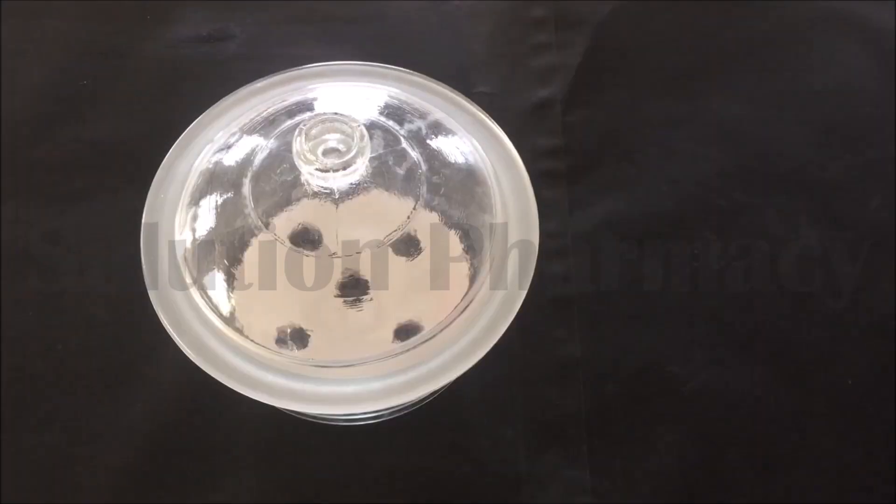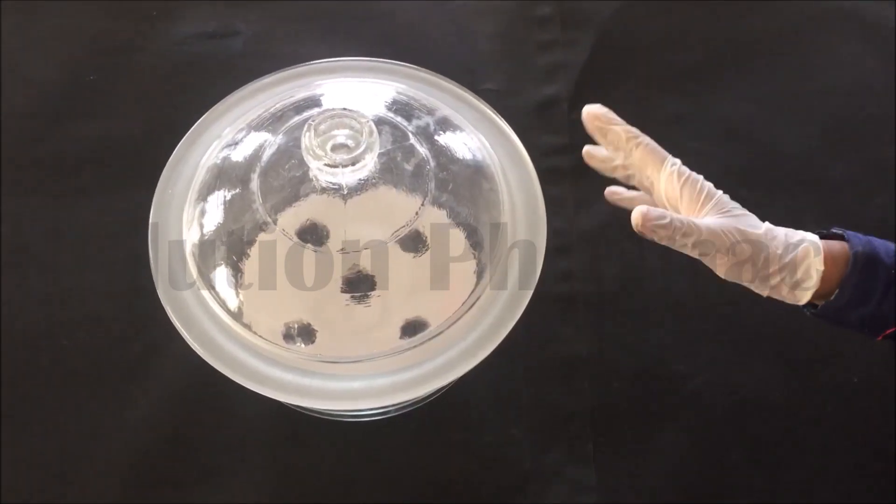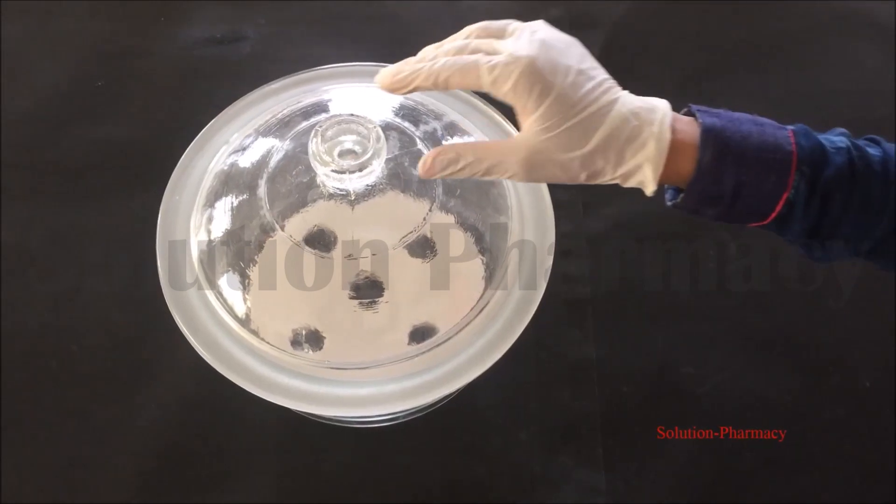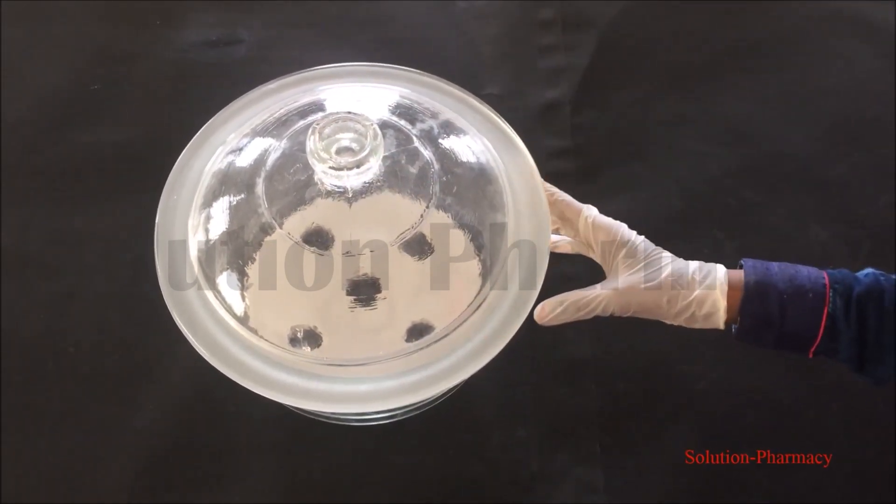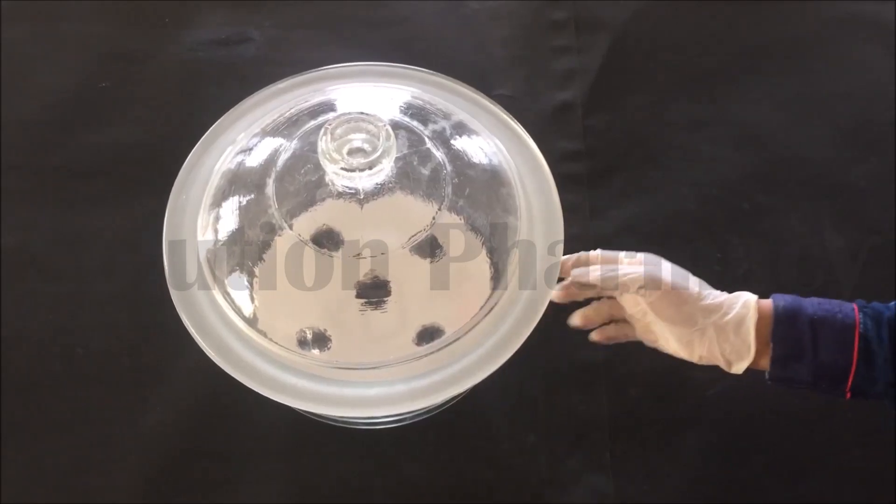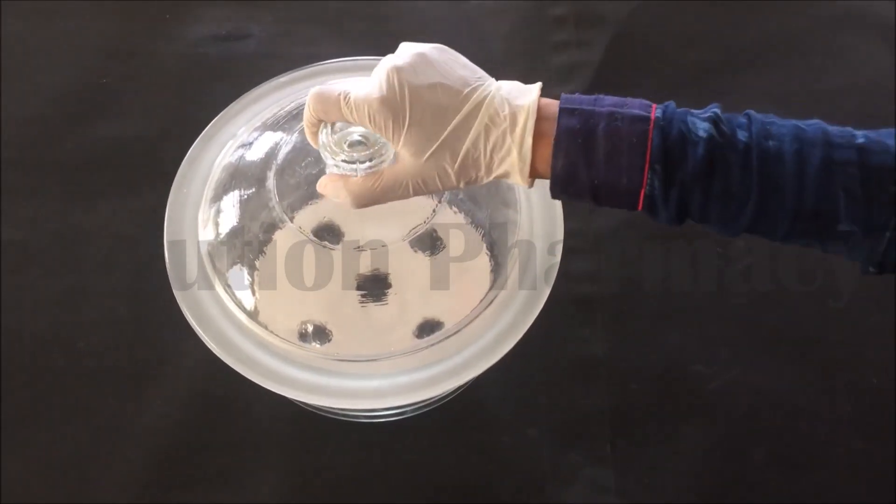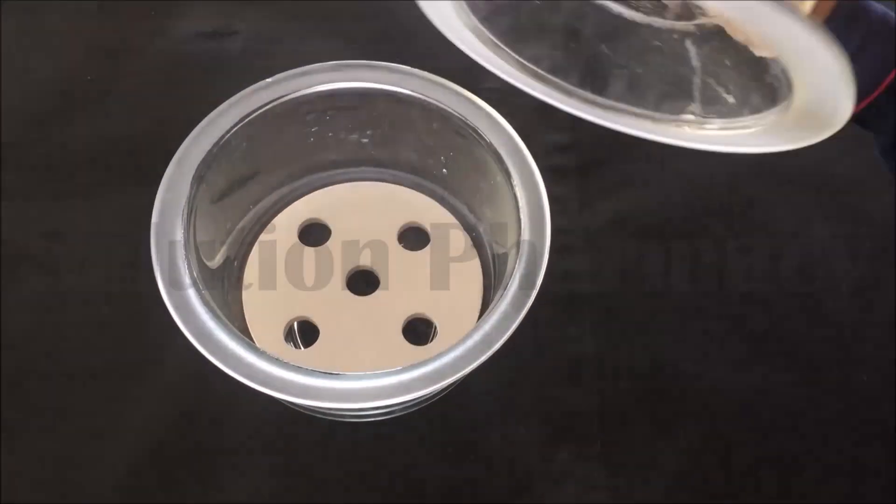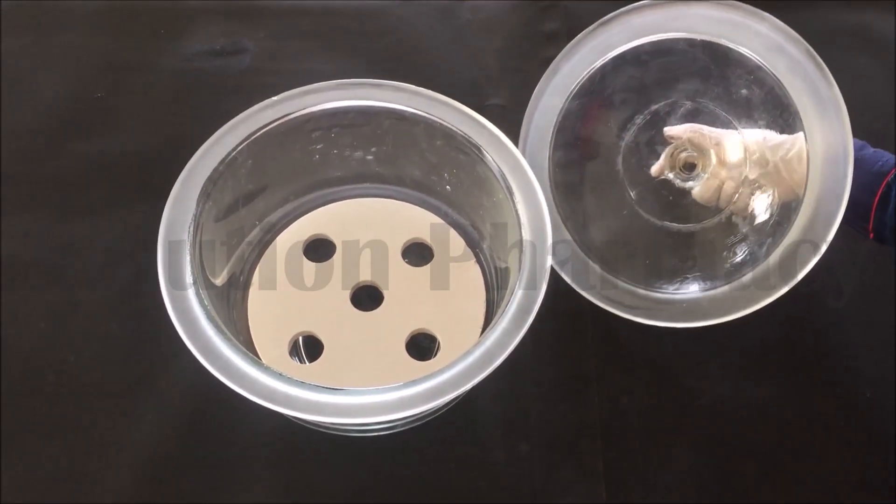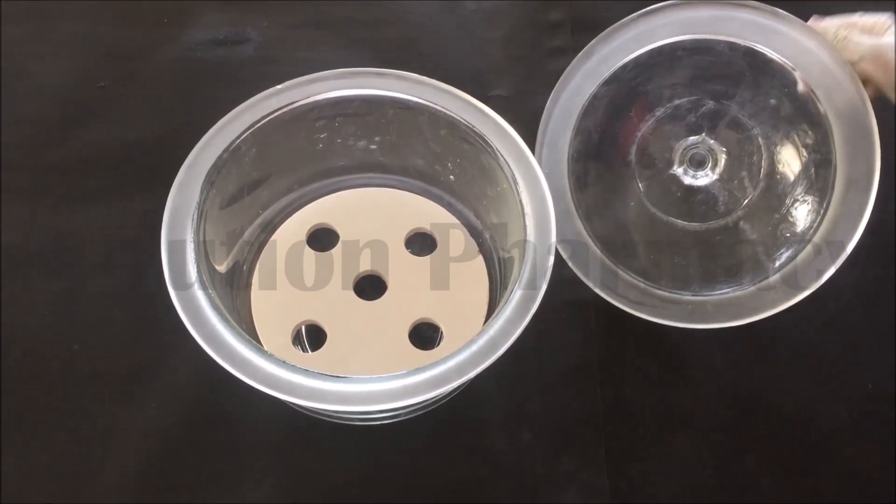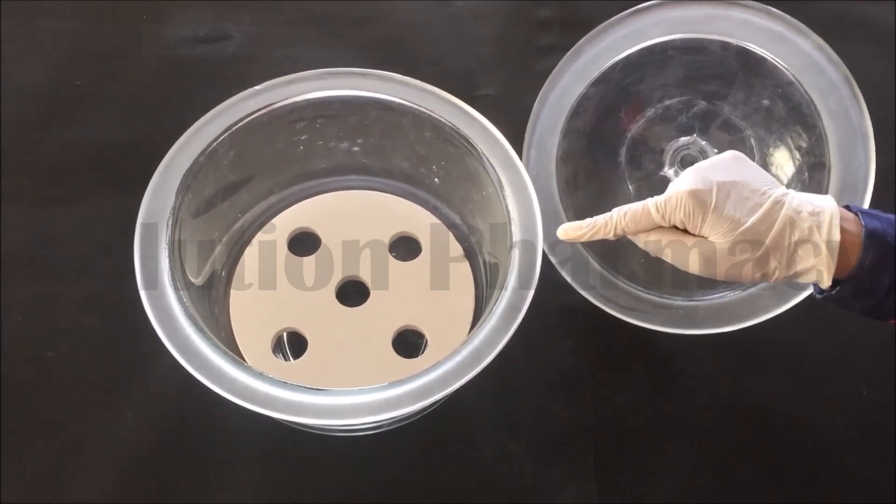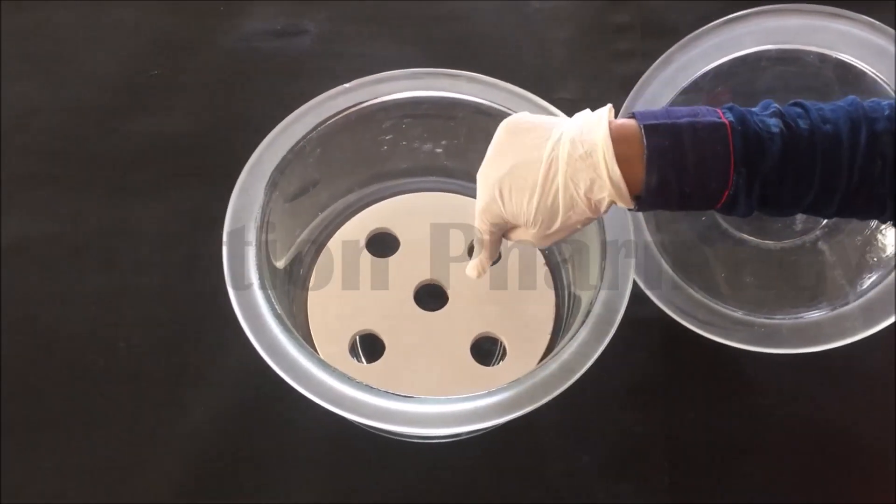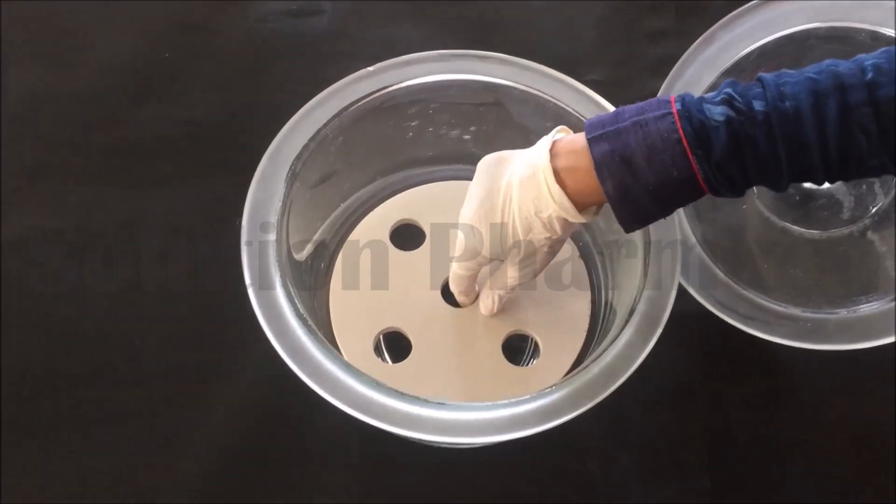Now let's know the parts of desiccator. This is a desiccator which is an airtight vessel and this desiccator is made up of glass. At the top of desiccator there is a lid. Remove the lid and keep it aside. This is the edge of lid which is called ground glass rim of the desiccator lid, and we have to do greasing here to make the desiccator airtight.